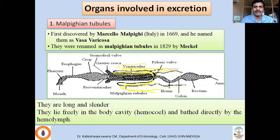Malpighian tubules were first discovered by Marcello Malpighi in the year 1669, and when he discovered them he named them 'vasa varicosa.' But in the year 1899, they were renamed as Malpighian tubules by Michael.